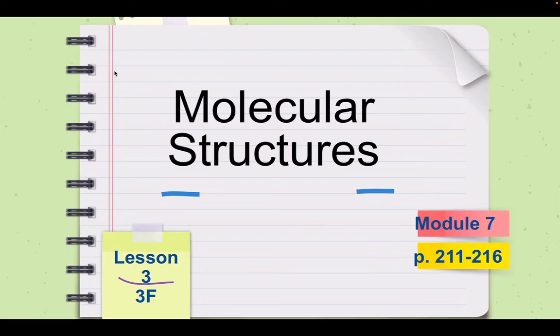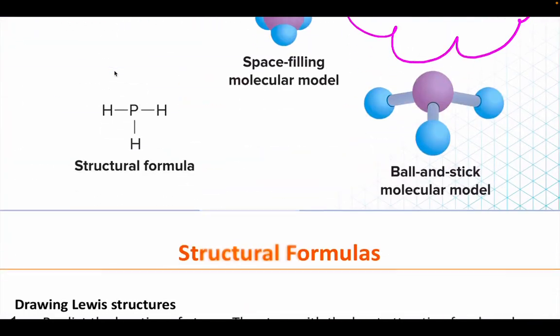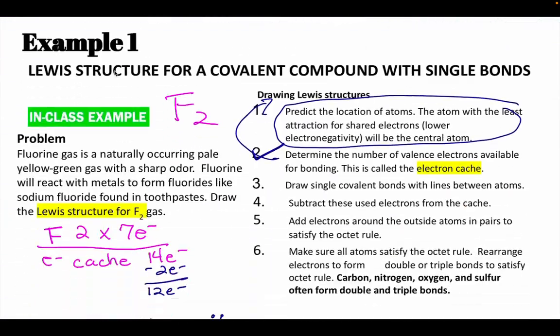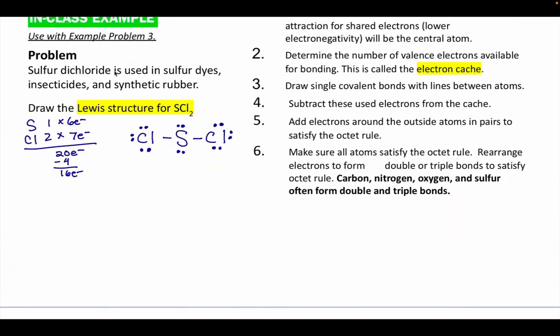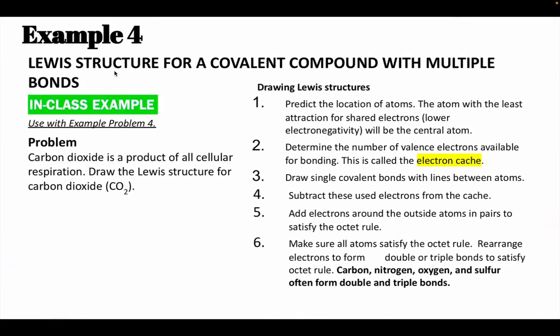From the previous video where we covered single covalent bonds and how to draw Lewis structures, now we're going to do multiple bonds and also some polyatomic ions. So here's our first example, carbon dioxide.